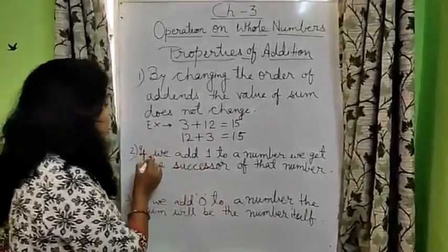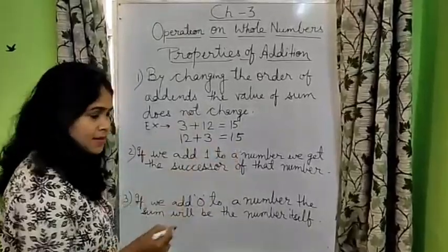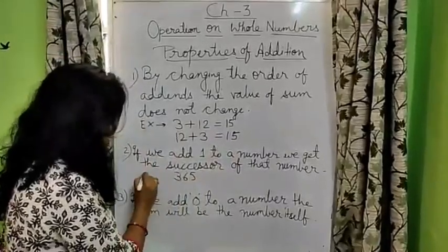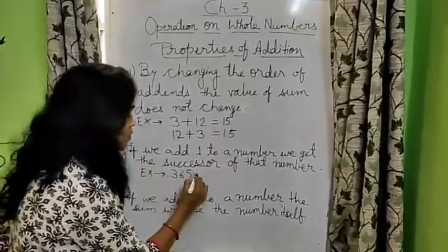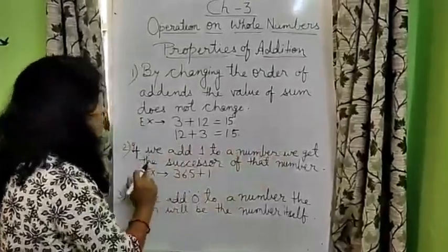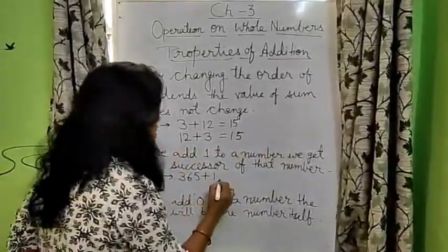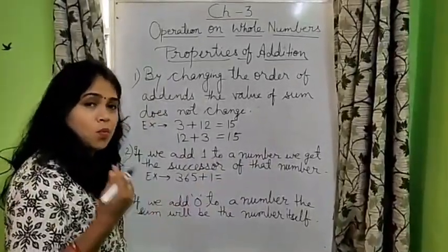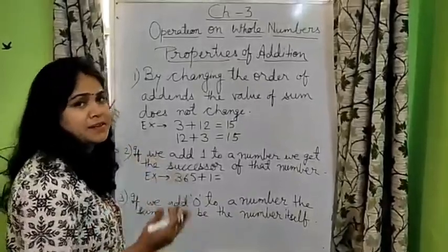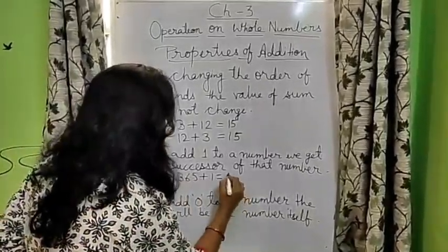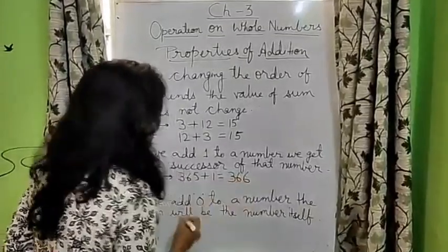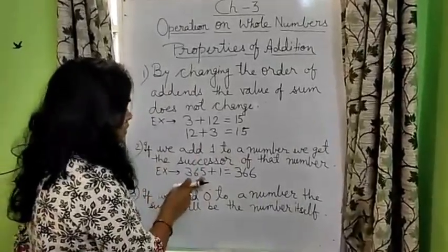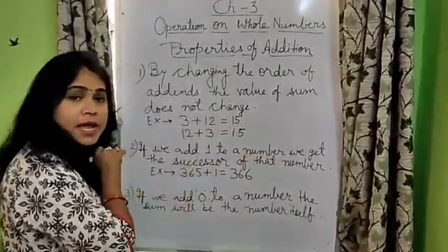Next is, if we add 1 to a number, any number, suppose I am taking 365. If I am adding 1 to a number, we get the successor of that number. Successor, you know what is the number which we get after adding 1 to any number. That means, just next number. So 365 plus 1 is 366. So 366 is called successor of 365.